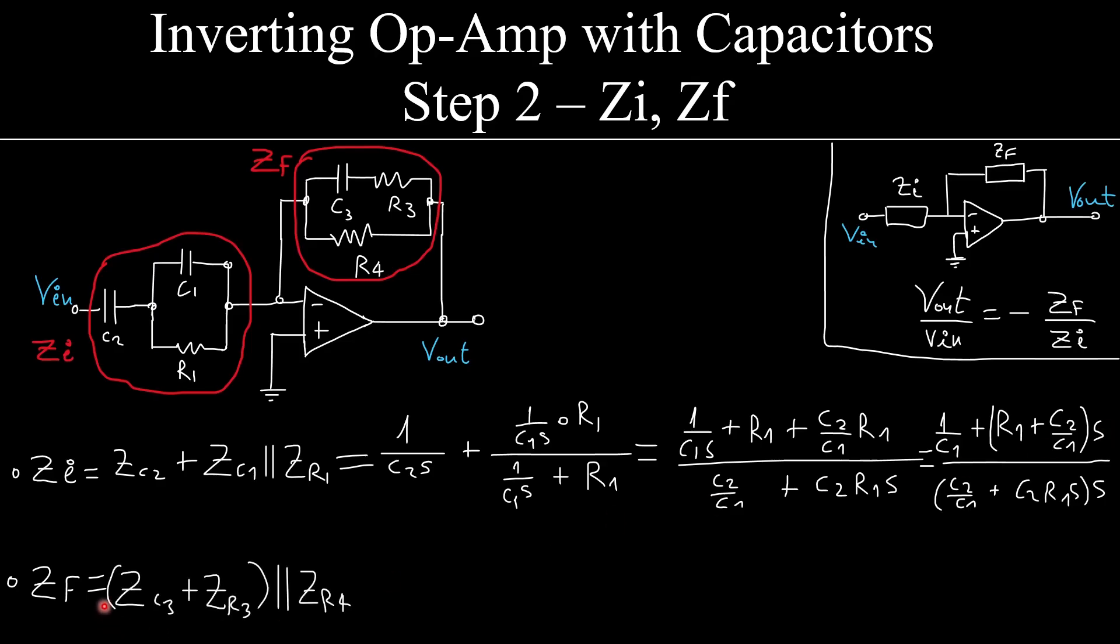Now I go to the feedback and I say that again, I have a resistance in parallel to a capacitor which is in series to another resistance. And now, nothing but the typical parallel configuration math.